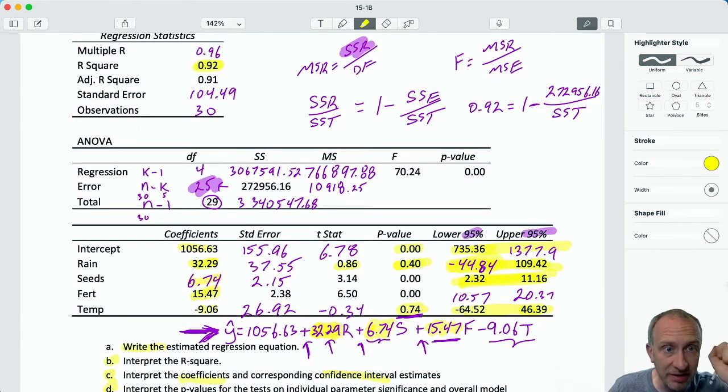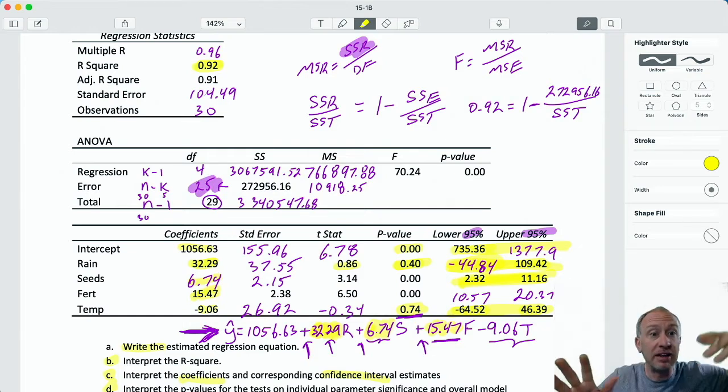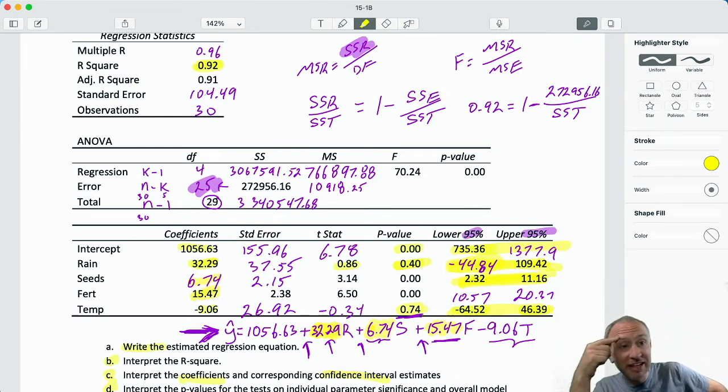I'm 95% confident that each additional degree Fahrenheit warmer that it is will impact wheat yield by either decreasing it by 64.52 pounds and potentially increasing it by as much as 56.39. So I'm 95% confident that the impact of an additional degree Fahrenheit on wheat yield will either decrease wheat yield by as much as 64.5 pounds or increase it by as much as 46.4 pounds. So once more, I see that I'm crossing that zero threshold. And that is again consistent with that large p-value.